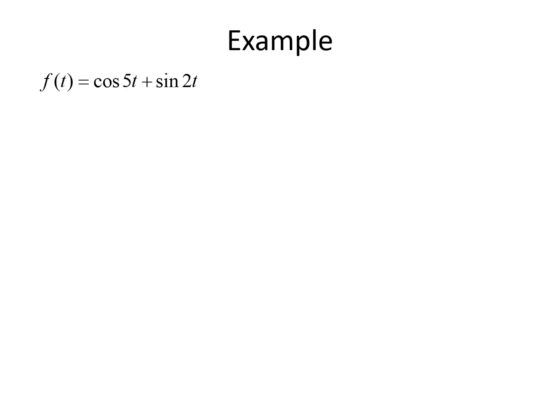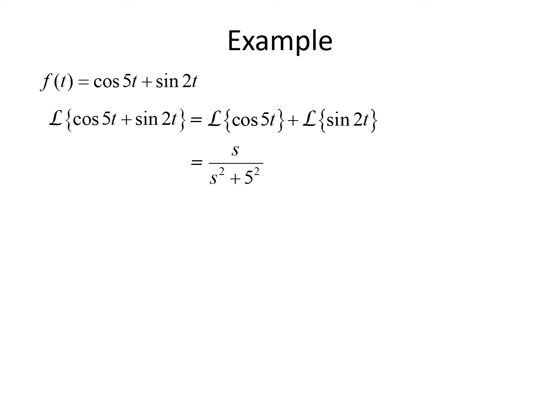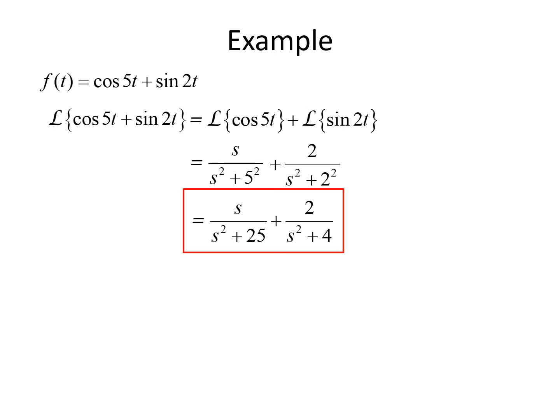For our final example, we find the Laplace transform of cosine of 5t plus sine of 2t. Evaluating term by term: the Laplace transform of cosine of 5t uses k equals 5, giving s over s squared plus 25. The Laplace transform of sine of 2t uses k equals 2, giving 2 over s squared plus 4. So the final Laplace transform is s over s squared plus 25 plus 2 over s squared plus 4.